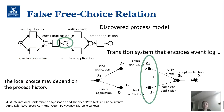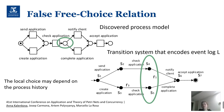First, we have to define the false free choice relation. We have our model and our event log represented as a transition system. In our free choice model, we have places that correspond to these choices. For instance, we can see a place rounded by a green circle, which is a choice place between "notify client" and "complete application" tasks. This place corresponds to two states in our transition system: S4 and S5.